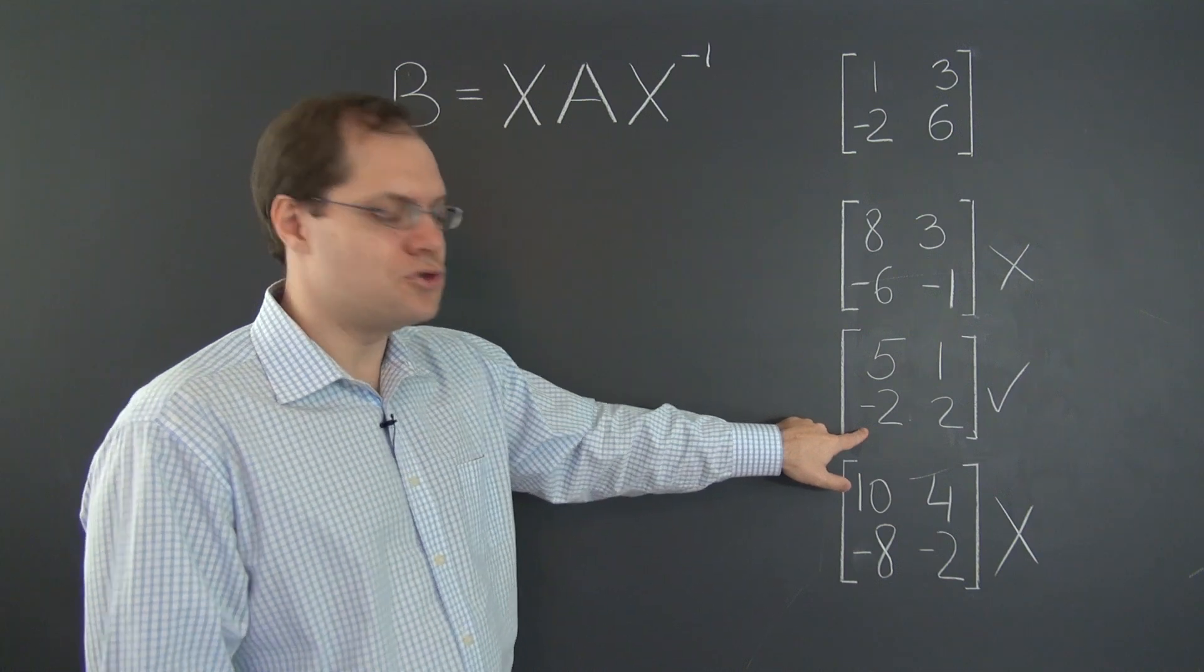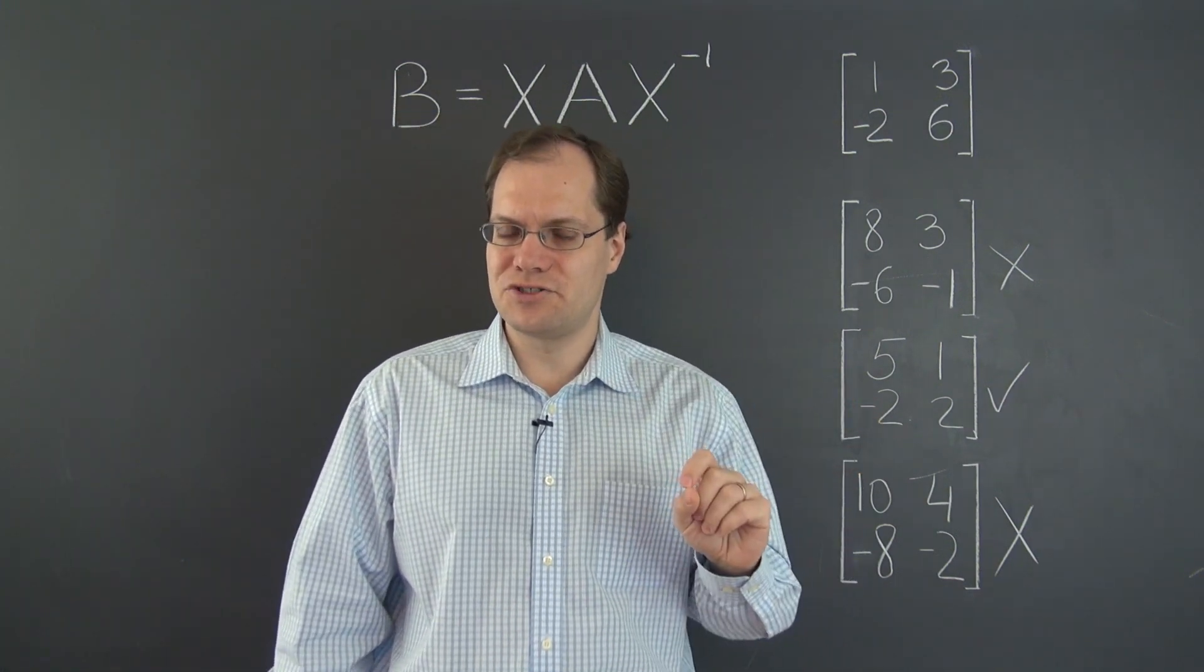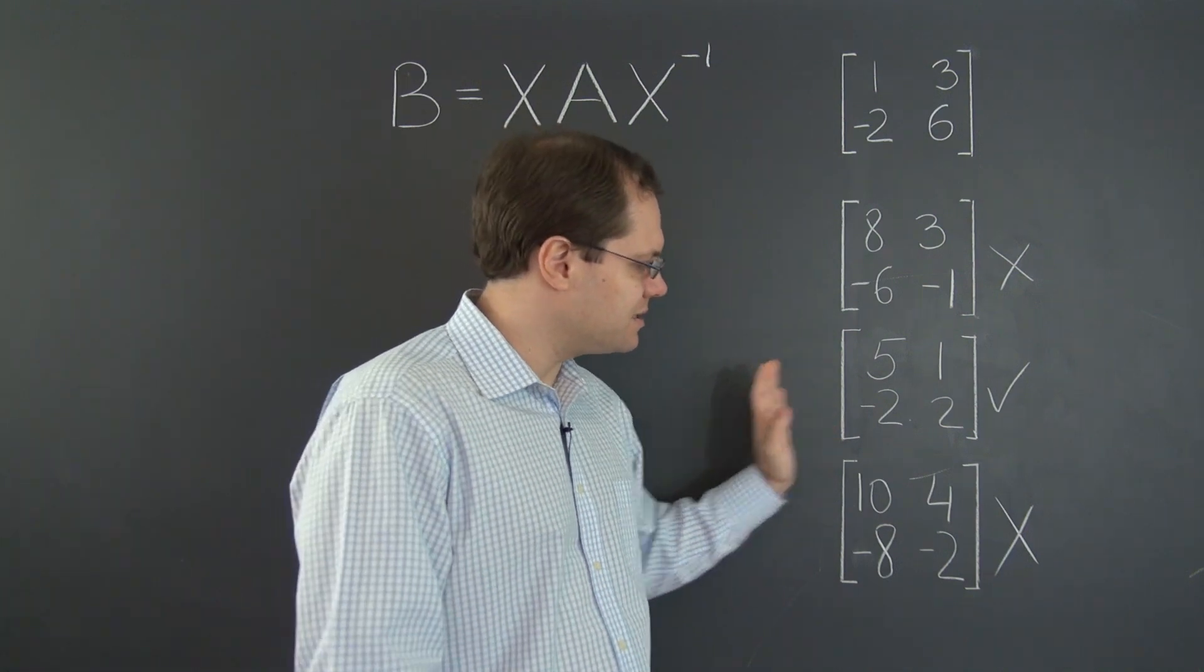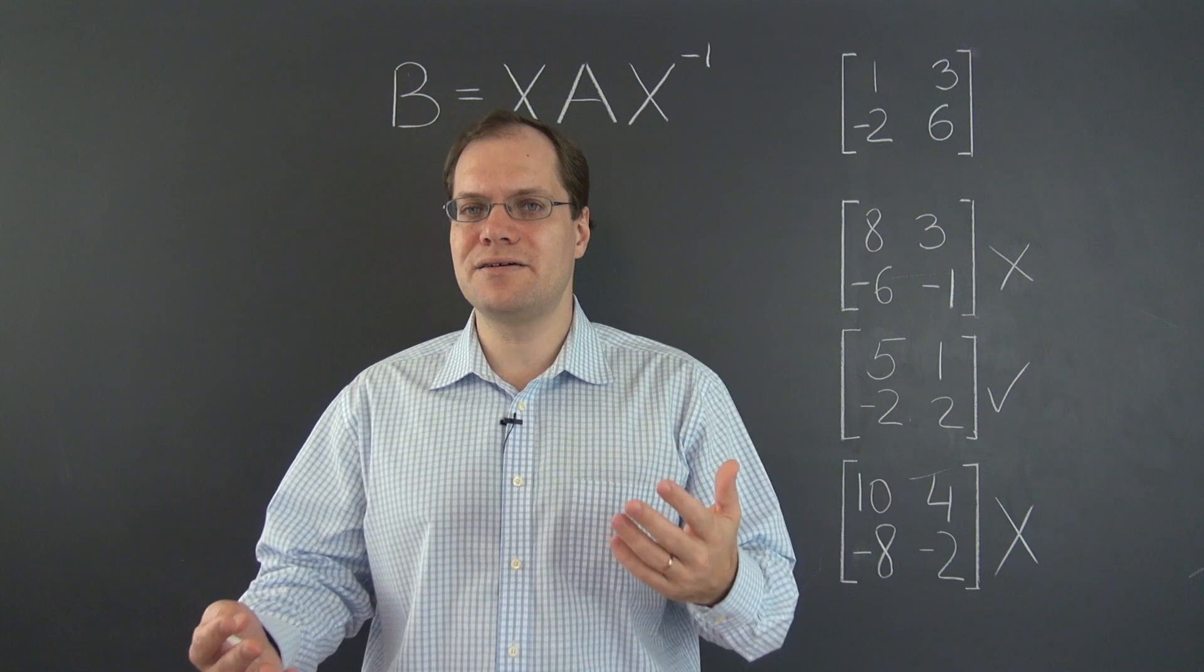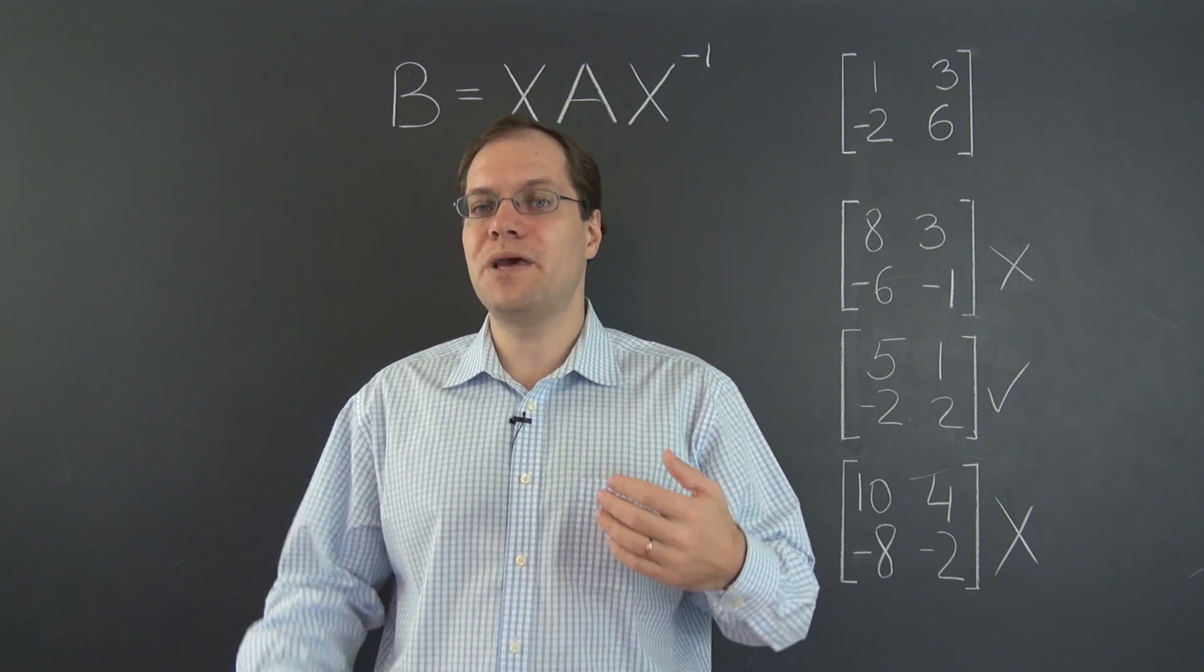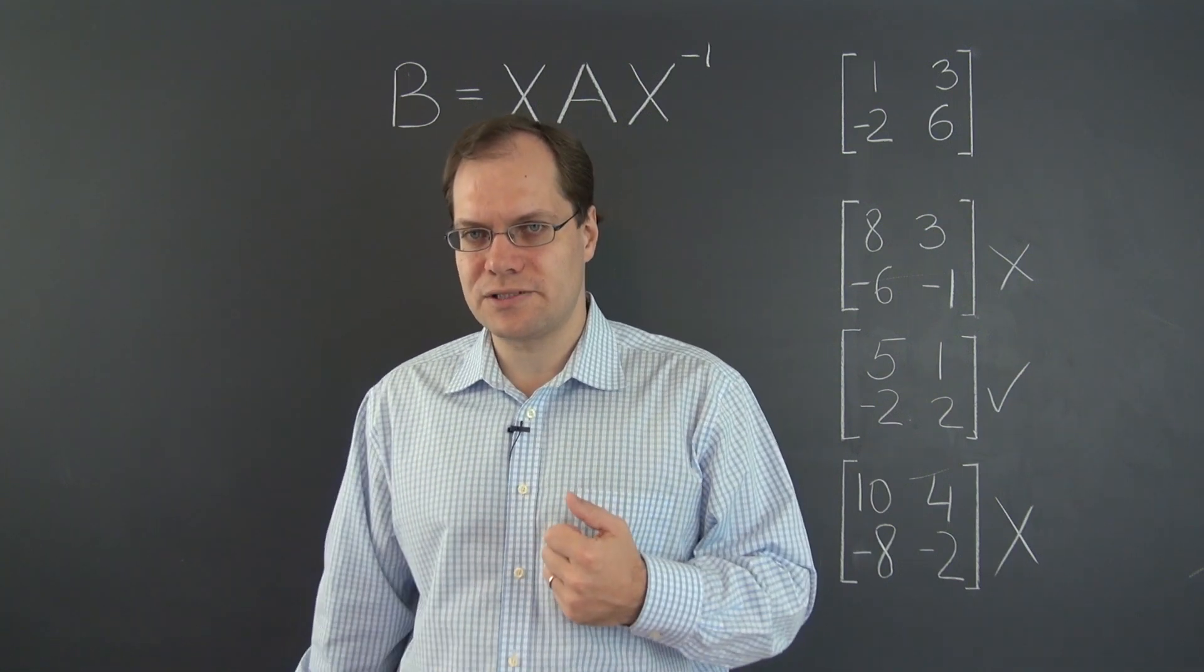However, for a 2-by-2 matrix, it does. If two matrices have identical trace and identical determinant, they have identical characteristic polynomials and therefore have identical eigenvalues. So maybe in this case, it is sufficient to be related by similarity transformation.